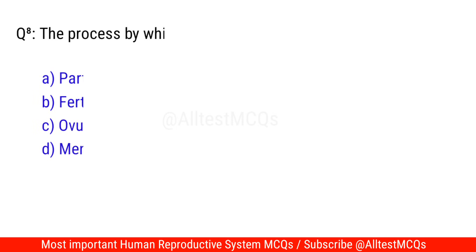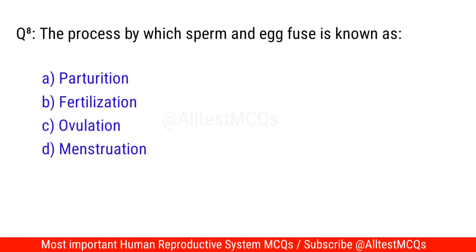Question No. 8: The process by which sperm and egg fuse is known as? The correct option is B. Fertilization.